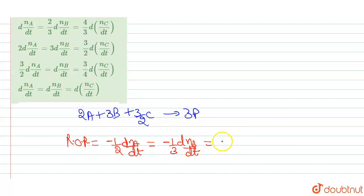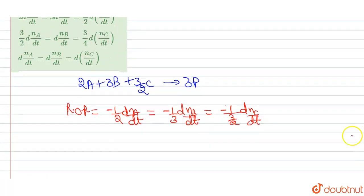For species C, it is also a reactant, so we apply a negative sign. The coefficient of C is 3/2, so we divide by 3/2: rate = -1/(3/2) × d[C]/dt, which equals -2/3 × d[C]/dt.